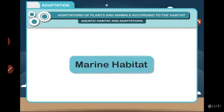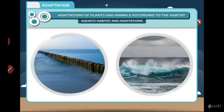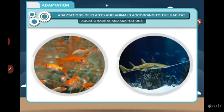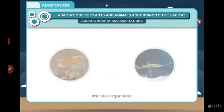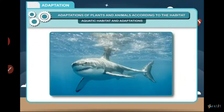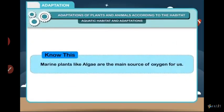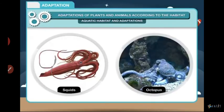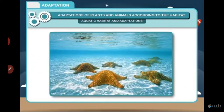Marine habitats include the salty water of seas and oceans and support the life of a variety of aquatic organisms called marine organisms. Sea animals have streamlined bodies which help them to move easily in the water. Marine plants like algae are the main source of oxygen for us. Sea animals like squid and octopus, which do not have a streamlined shape, stay deeper in the ocean near the sea bed and catch prey which moves towards them.